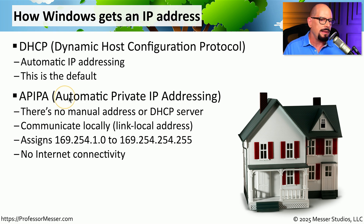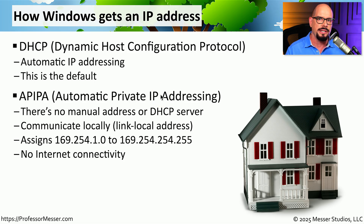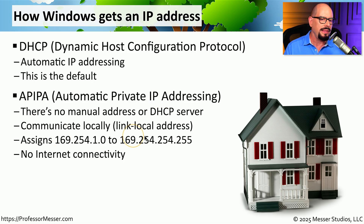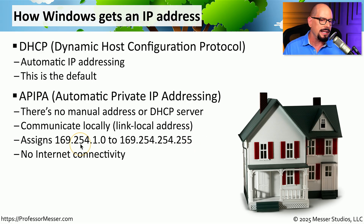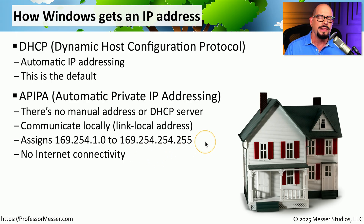If you're assigned an APIPA address, you're not able to communicate across the internet. One way to tell if you've been assigned an APIPA address is to look at the IP address on your workstation. If it is between the range of 169.254.1.0 through 169.254.254.255, then you have been assigned an APIPA address.